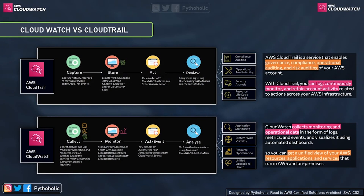If you look at both process diagrams, both services appear similar considering their pillar structures. With CloudTrail, we have: capture, store, act, and review. We capture logs based on the API calls made in the AWS account, store them in S3, use that to create CloudWatch alarms and events in the act phase, and analyze the data using AWS Athena. Most importantly, we use CloudTrail for auditing — it is a service that enables governance, compliance, operational auditing, and risk auditing of your AWS account.